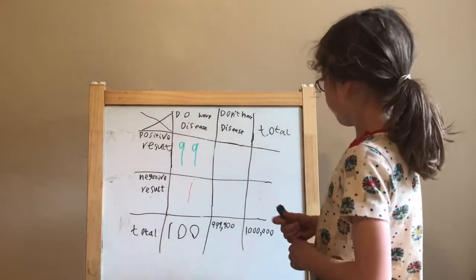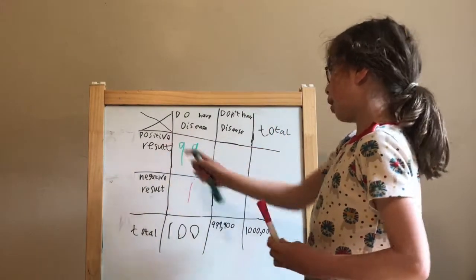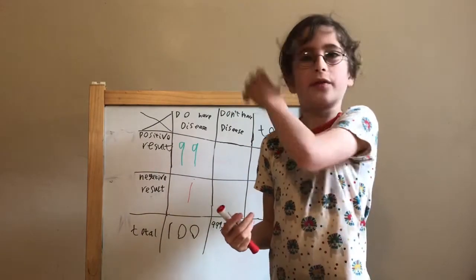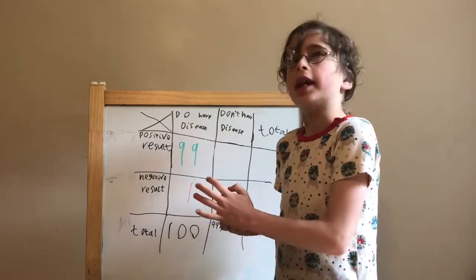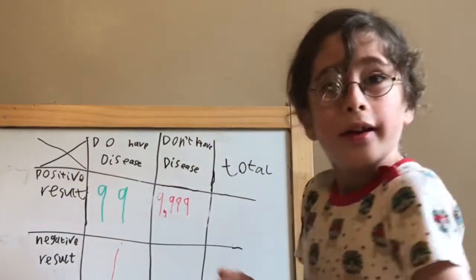So now we're going to move on to these. Don't have the disease but the machine says you do. So the test gets it wrong one percent of the time, so the answer should be, and it is, 9,999.